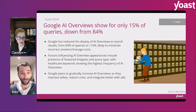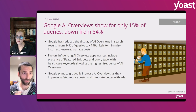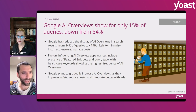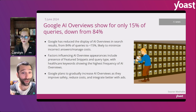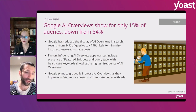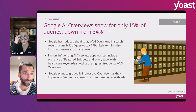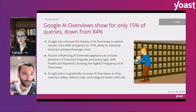Have you been seeing AI Overviews in England yet? Not personally — Gemini as an app can now be downloaded on Android in the UK, but that's nothing like AI Overviews in SERPs. AI Overviews are not showing on desktop in the UK at all.